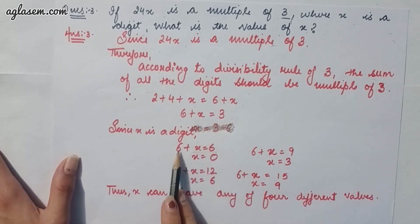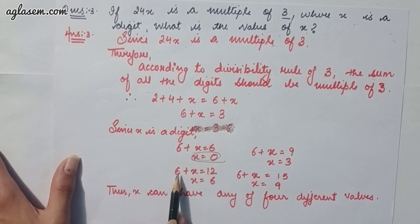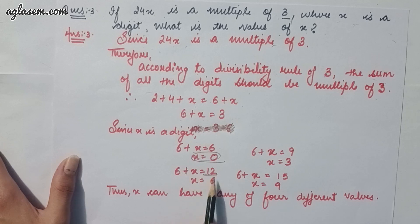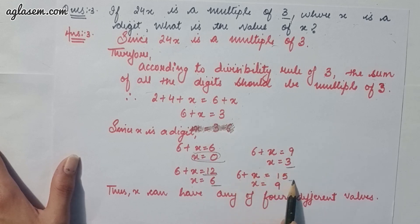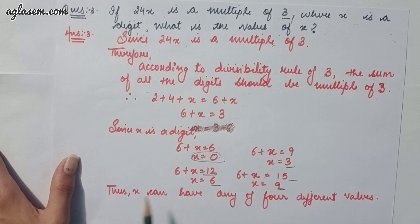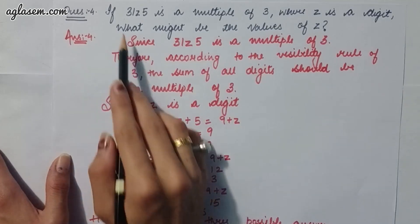Since x is a digit: 6 + x = 6 gives x = 0; 6 + x = 12 gives x = 6; 6 + x = 9 gives x = 3; 6 + x = 15 gives x = 9. So x can have any of the four values: 0, 3, 6, or 9.